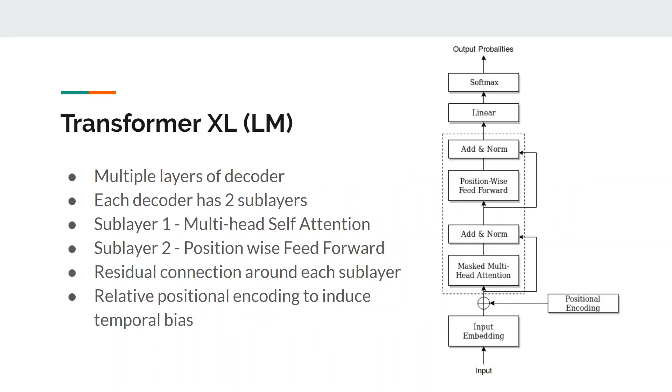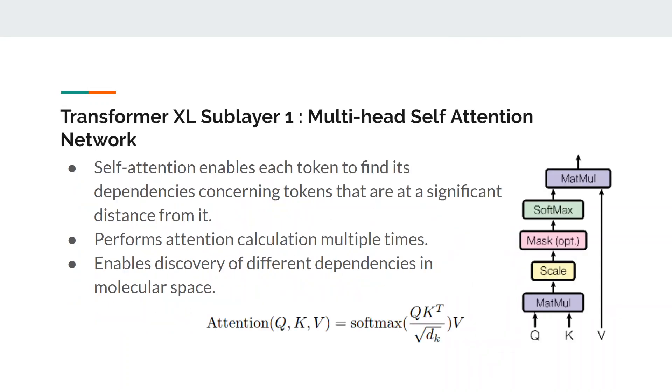The transformer excel network for language modeling consists of multiple layers of decoders wherein each decoder has two sublayers and residual connections are implemented around each layer. Output of one decoder acts as an input for the decoder above it. Moreover, relative positional encodings are added to the input token embeddings to induce a sense of temporal bias amongst the tokens.